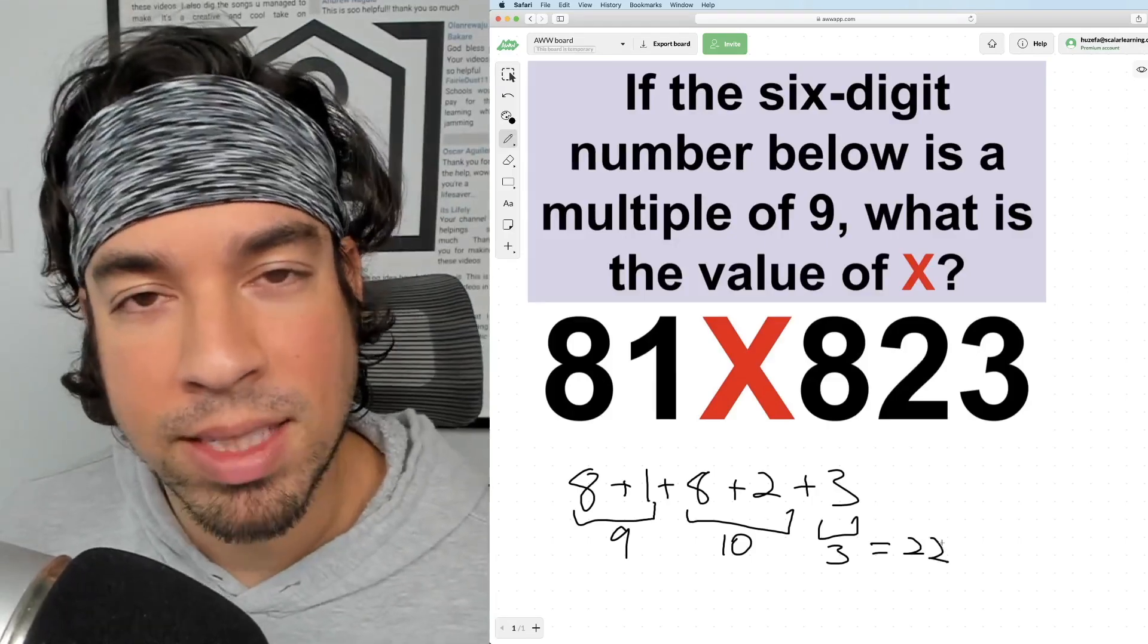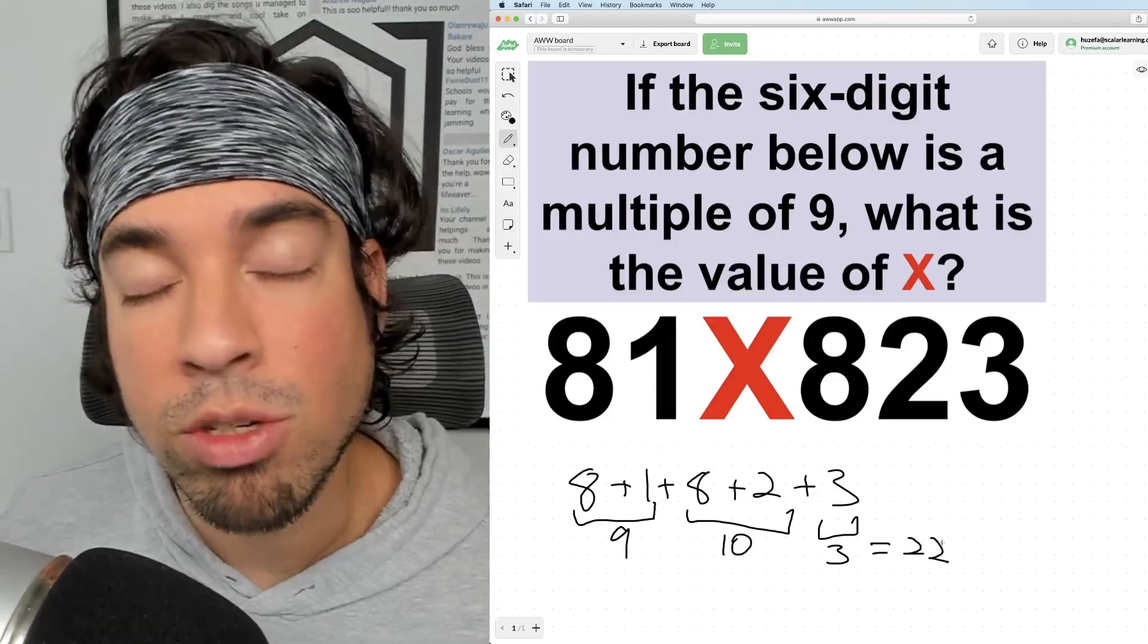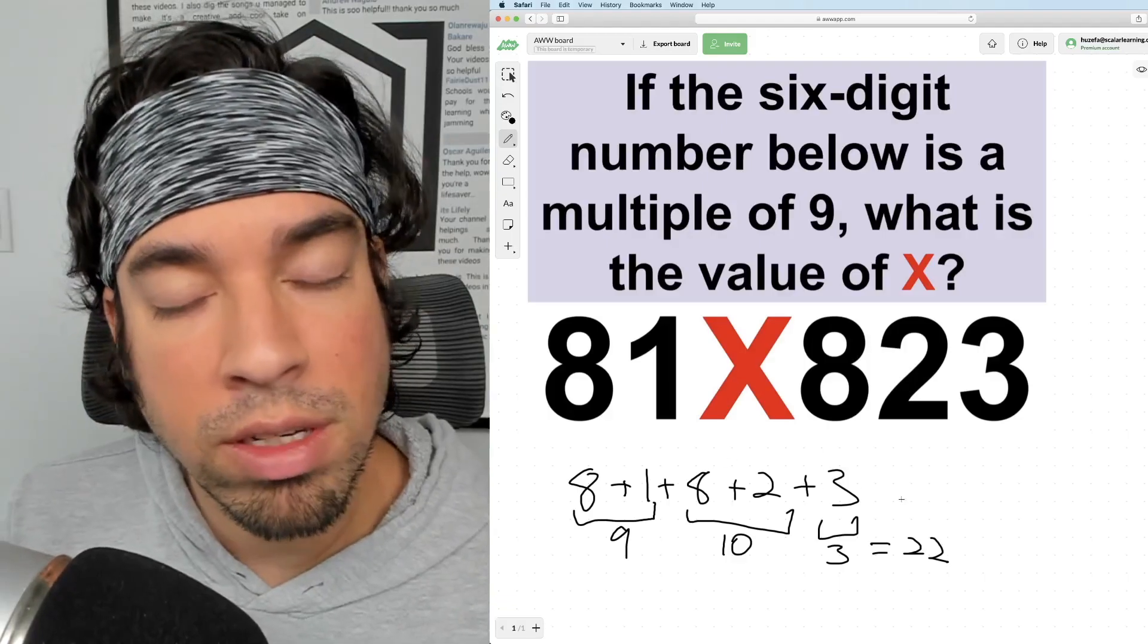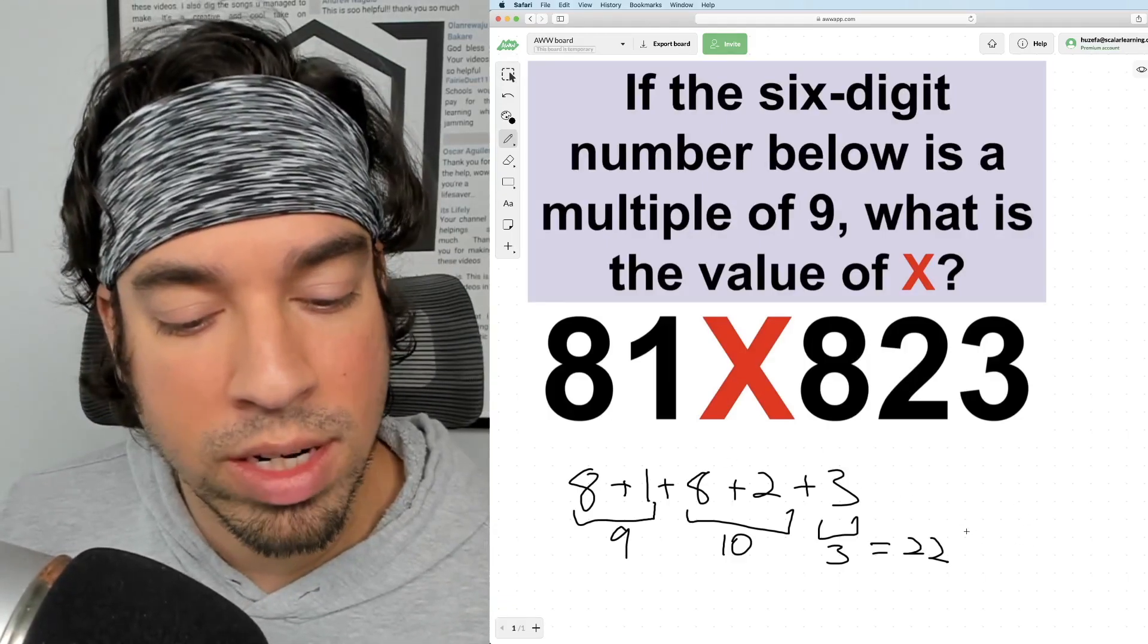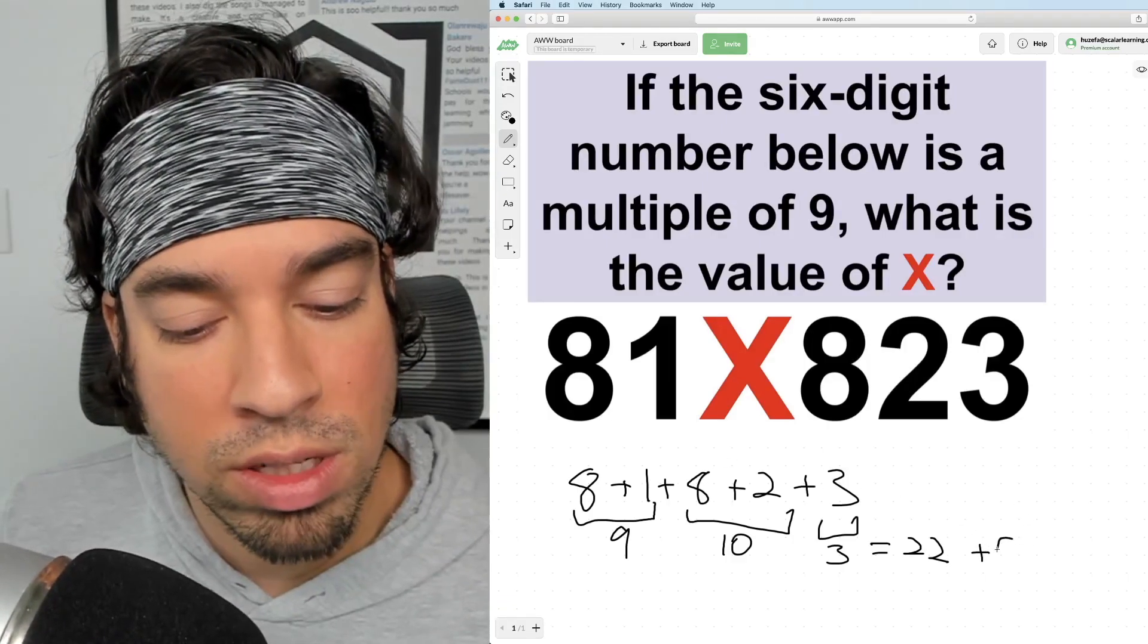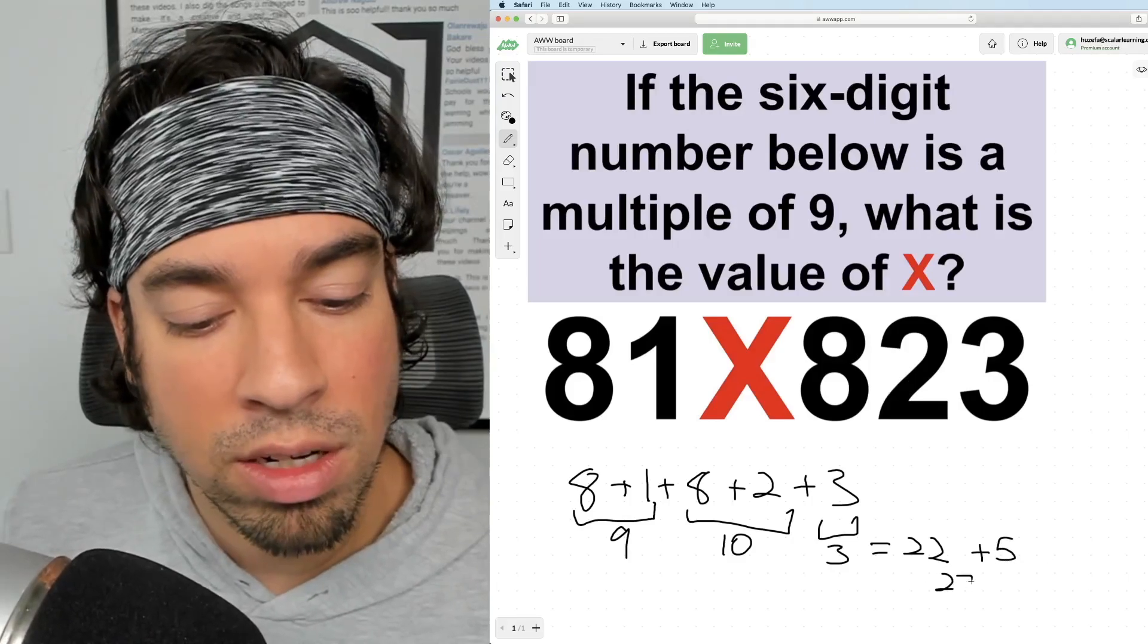So obviously we can't go back to 18, right? Because we can't have a negative digit. But we can go up, and the closest multiple of nine is 27, which means all we need to do is add 5 and we'd get 27.